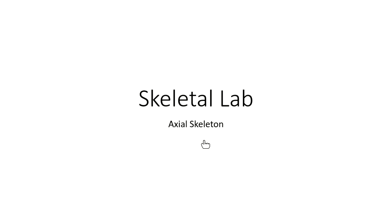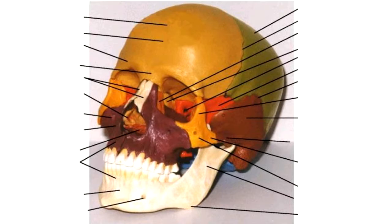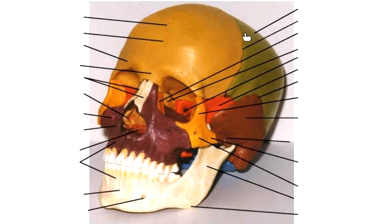The upper appendicular starts at your scapula and clavicle down through the arm. The lower appendicular starts with your hip bone down through the leg. Everything else — the skull, vertebrae, rib cage, and sacrum — are components of the axial skeleton. Let's take a look at this colored skull slide to point out the basic bones.